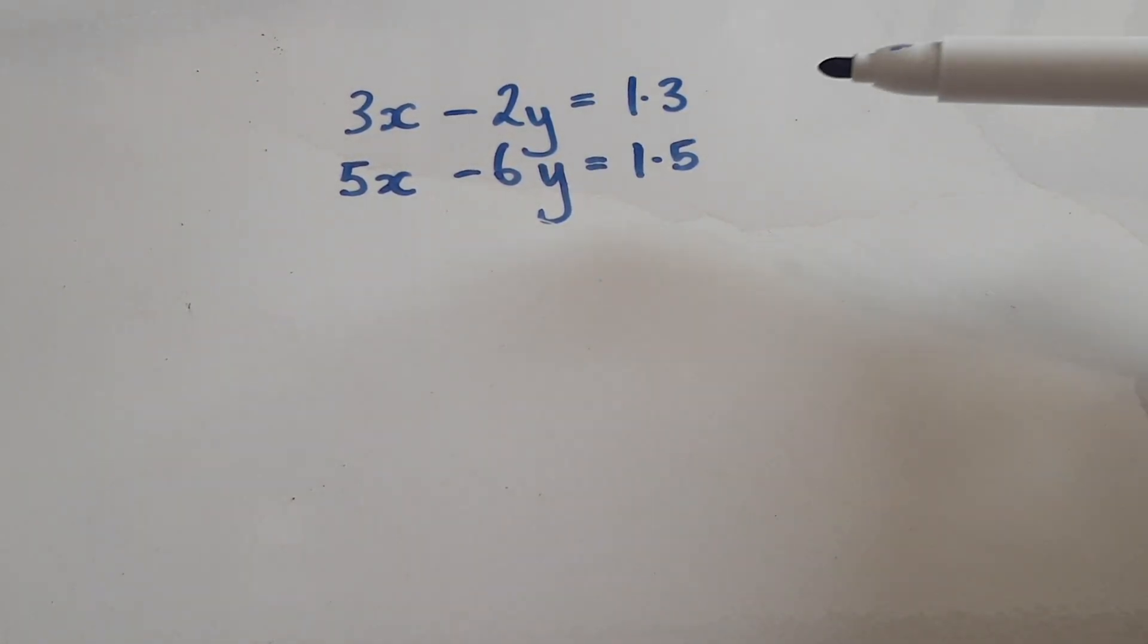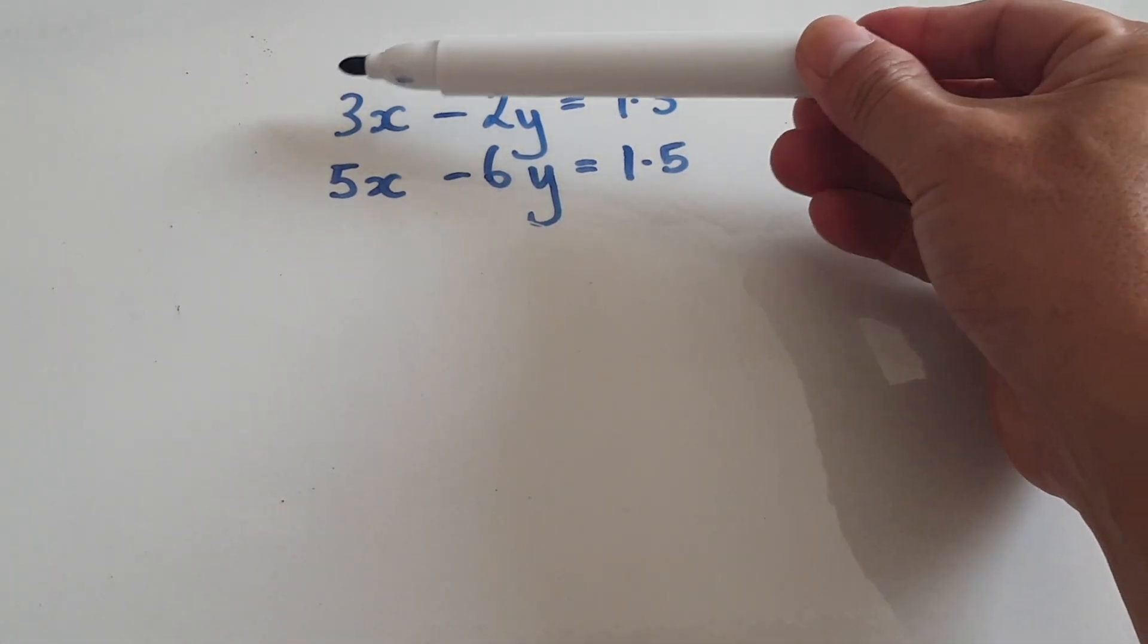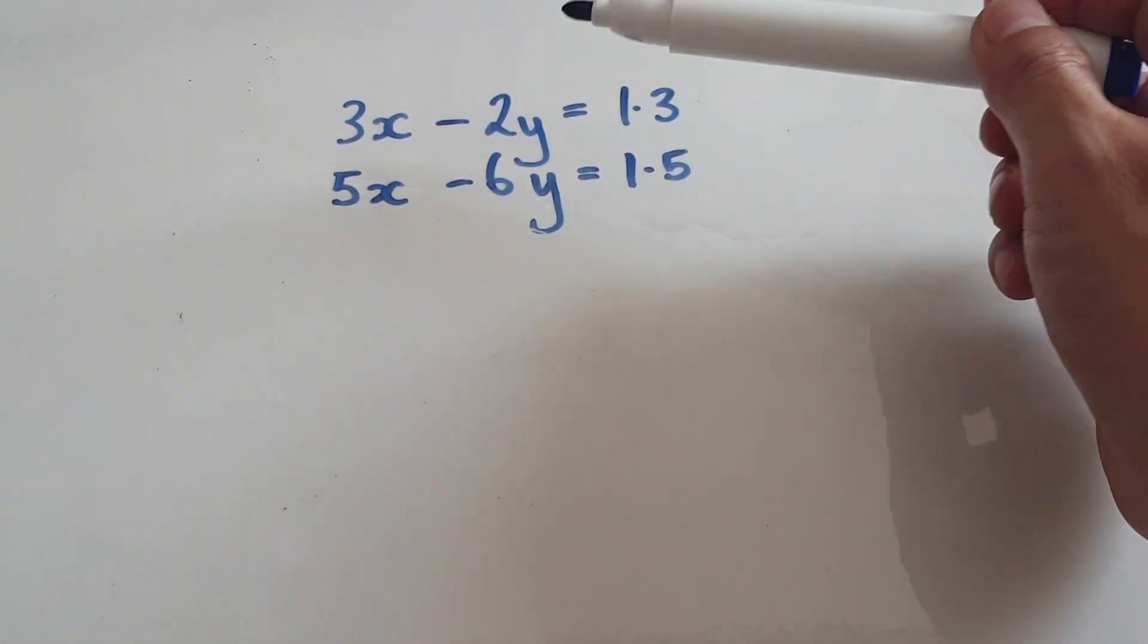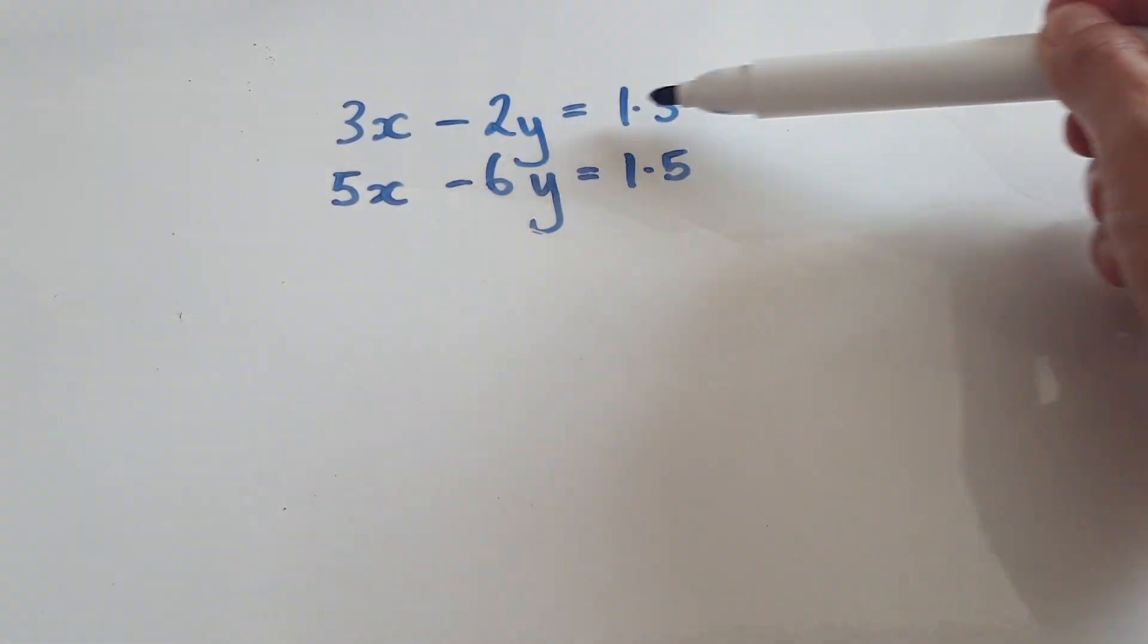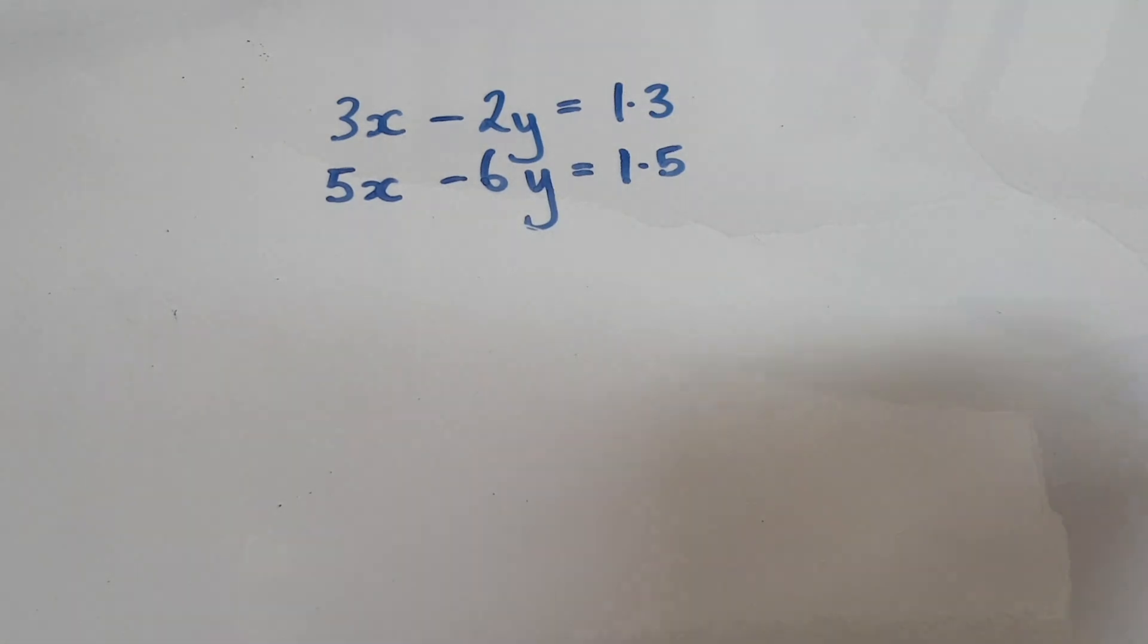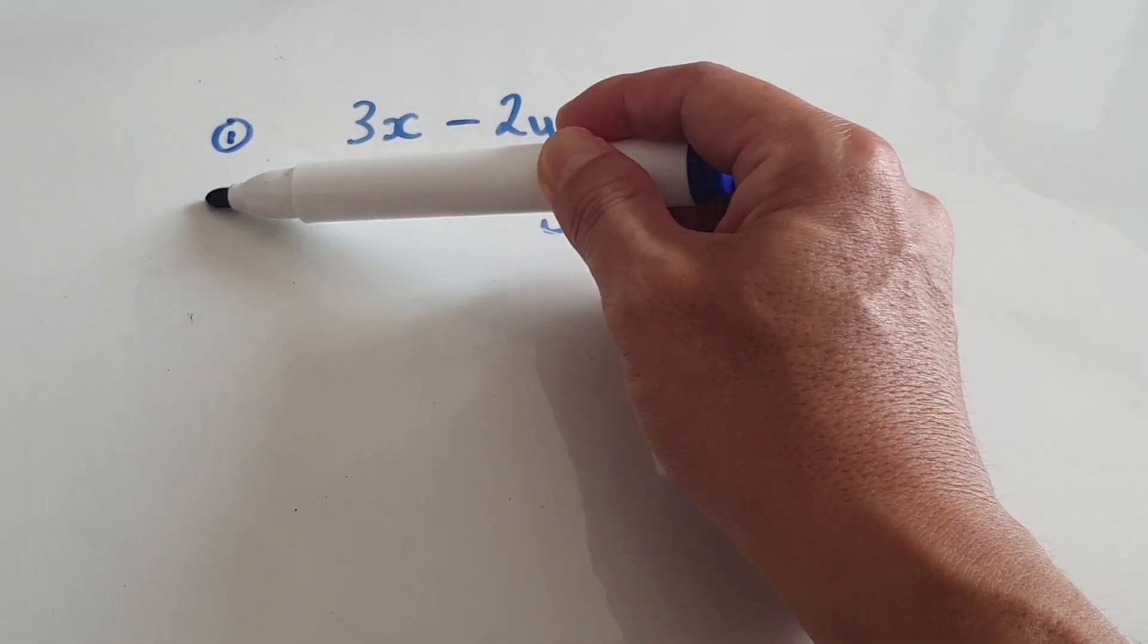Let's try and solve these simultaneous equations with decimals. To solve simultaneous equations, either get the x's to be the same or the y's to be the same. For example, if we times everything by 3 for the top one, then you would have 6y and 6y. You see what I mean later. So let's call this equation 1 and equation 2.